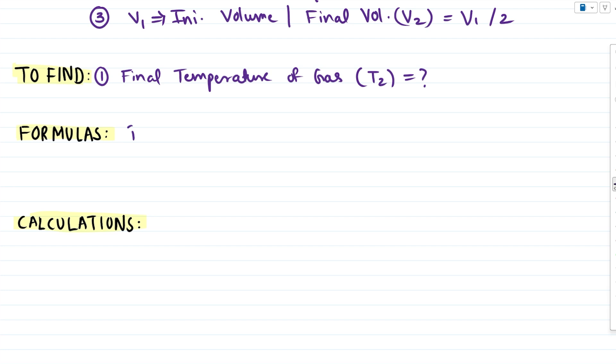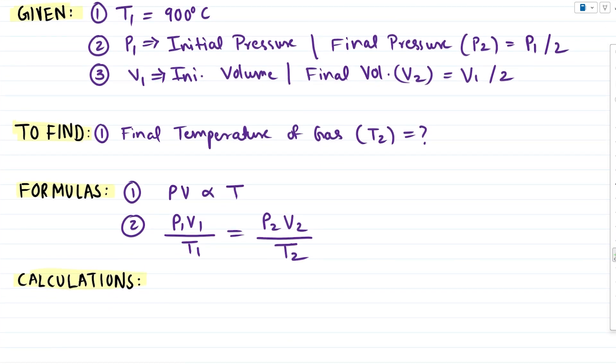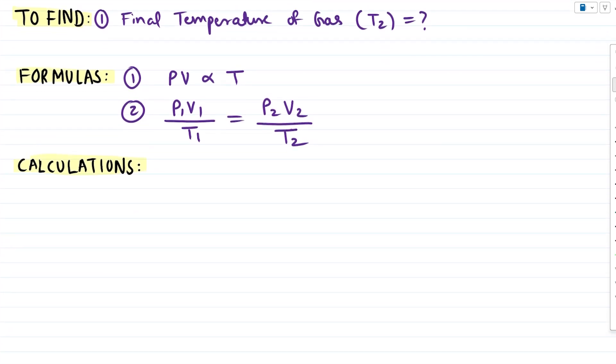Now let's understand what formulas we can use. We know we can use the ideal gas equation. For any gas, pressure times volume is always proportional to temperature. From this, P1 times V1 divided by T1 must equal P2 times V2 divided by T2. I'll call this formula number 2. There is only one unknown quantity, T2, and we can find it using this formula.